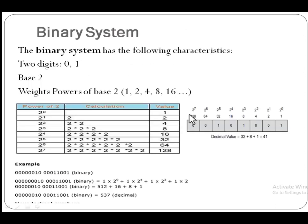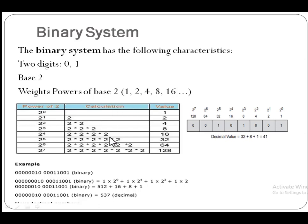The second system is the binary system. It has two digits: 0 and 1. Its base is 2. The powers of its base are: 2 raised to power 0 is 1, 2 raised to power 1 is 2, and 2 raised to power 2 is 4, and in the similar way. These are very important numbers.